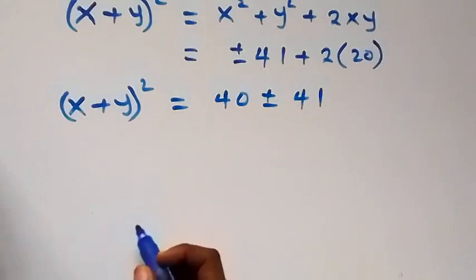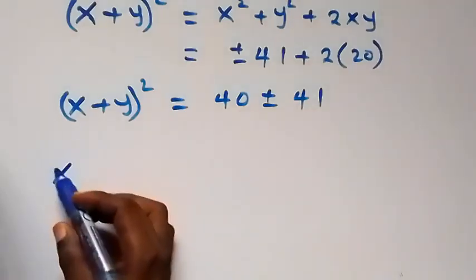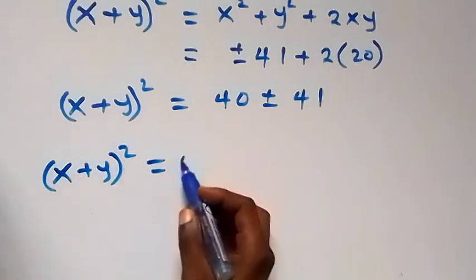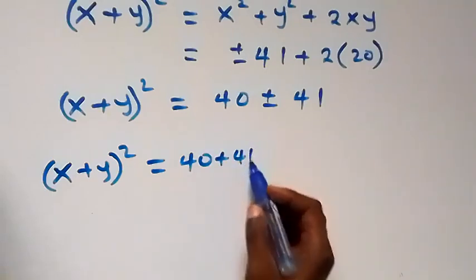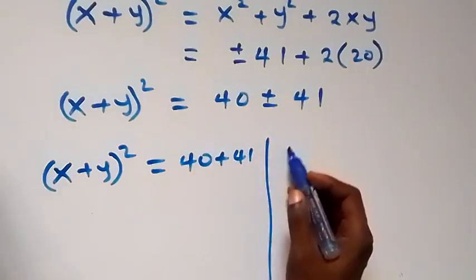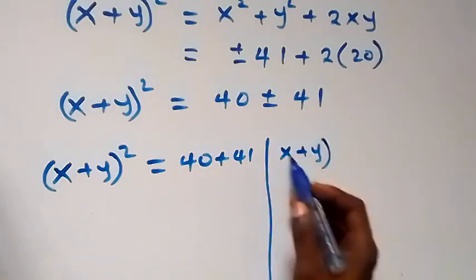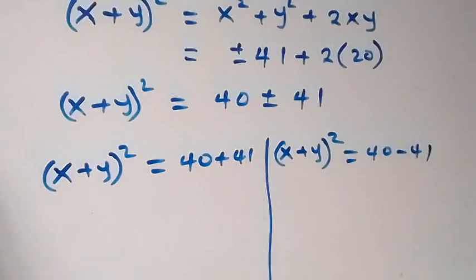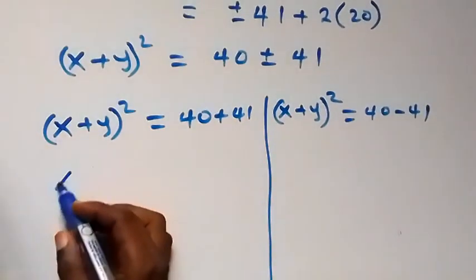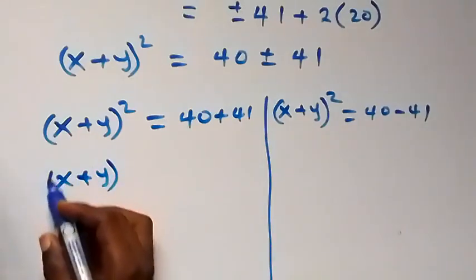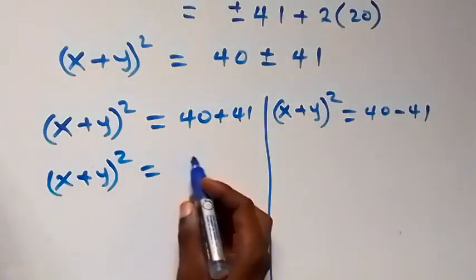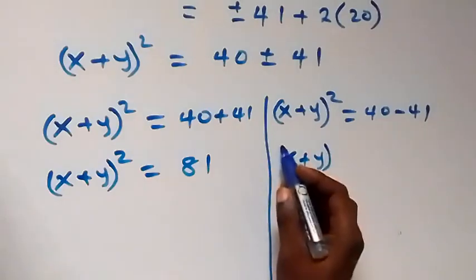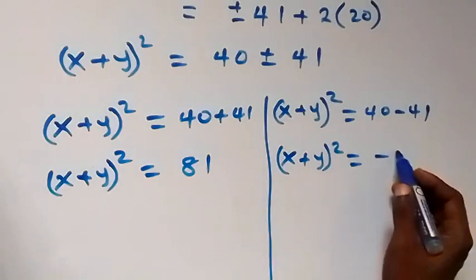We have two possible cases. Case one: x plus y squared equals 40 plus 41, which gives 81. Case two: x plus y squared equals 40 minus 41, which gives minus 1.